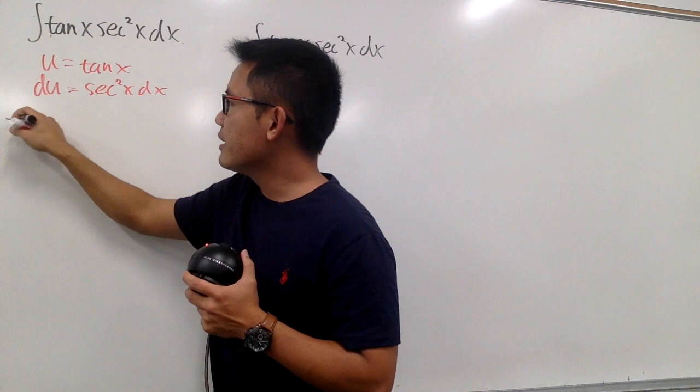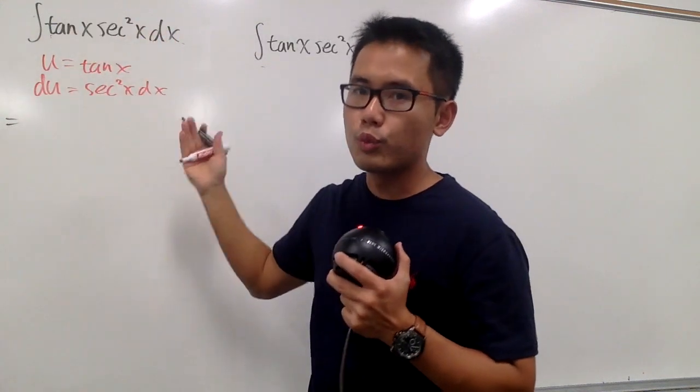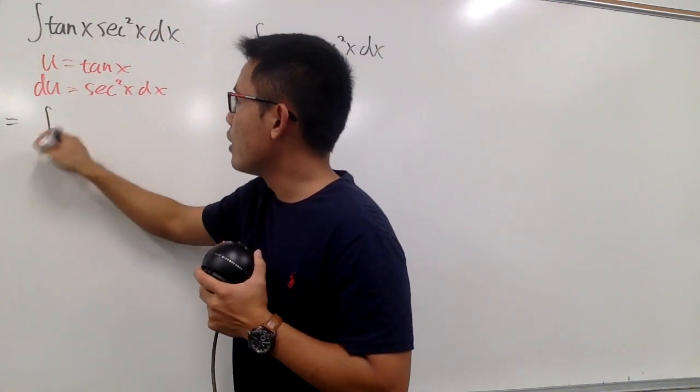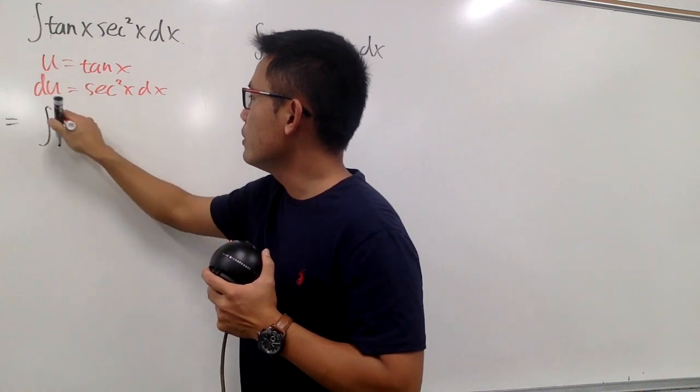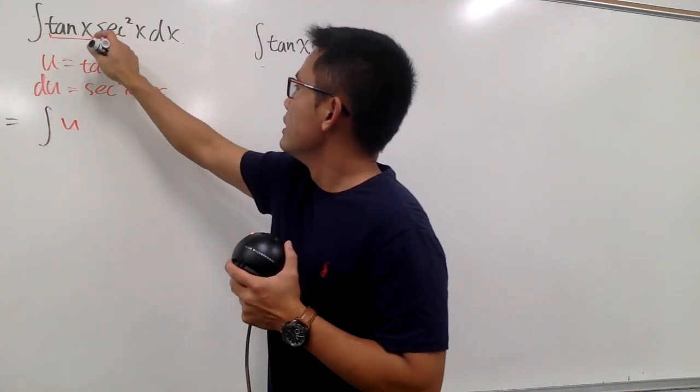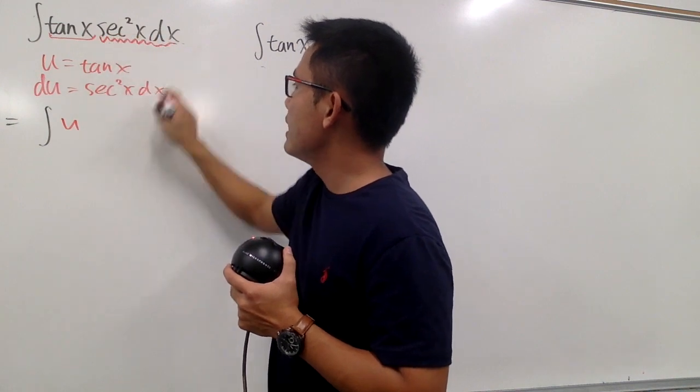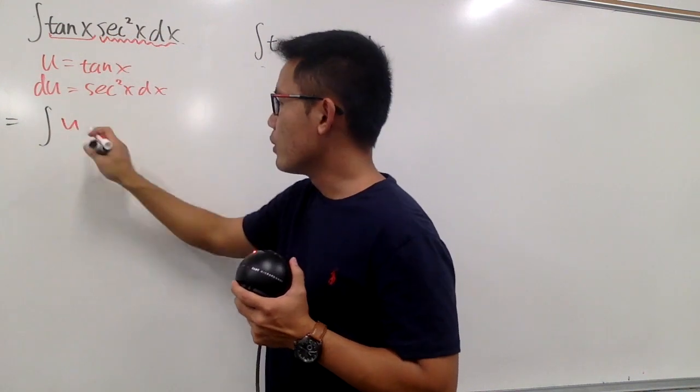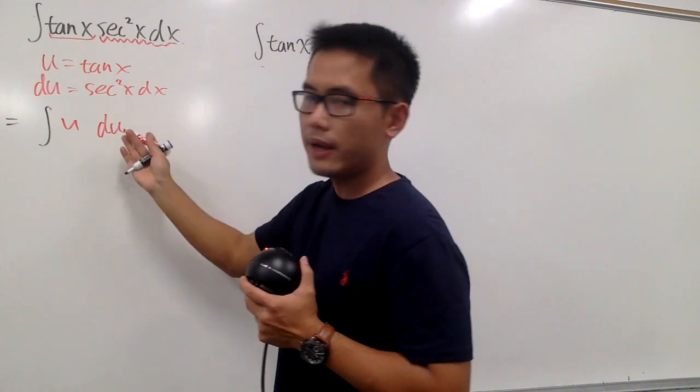And you see, I can take this integral into the u world right away. This is the integral, tangent x is my u. This is my u right here. And secant squared x times dx, that's my du. So we are just integrating u in the u world right away.